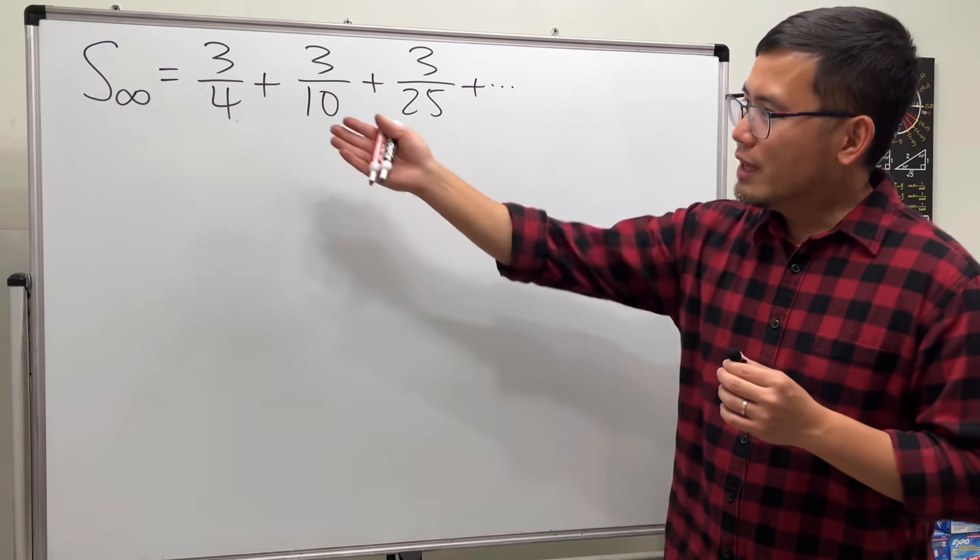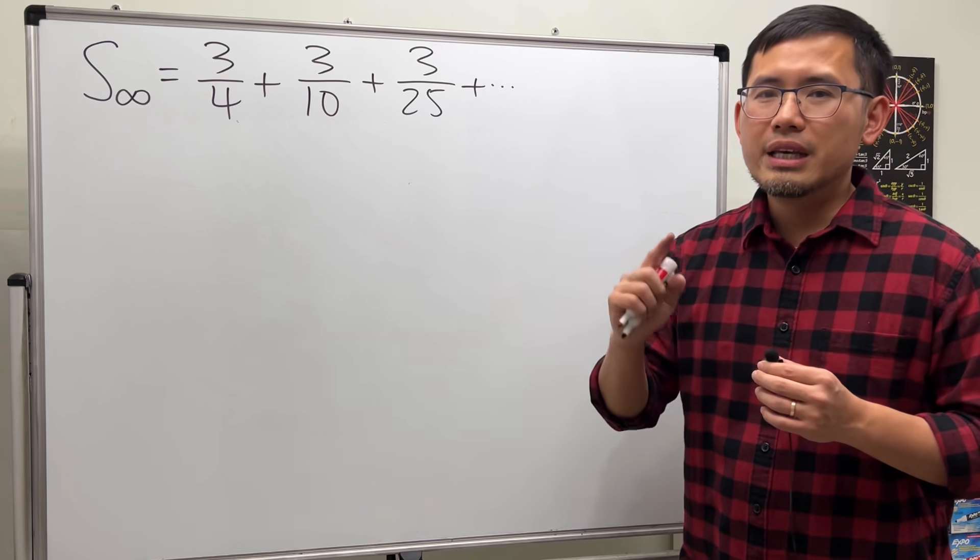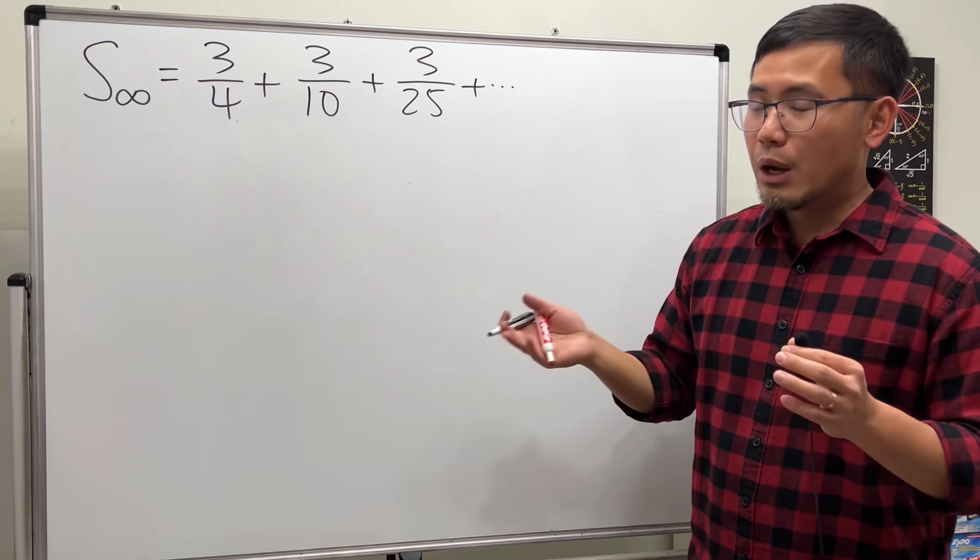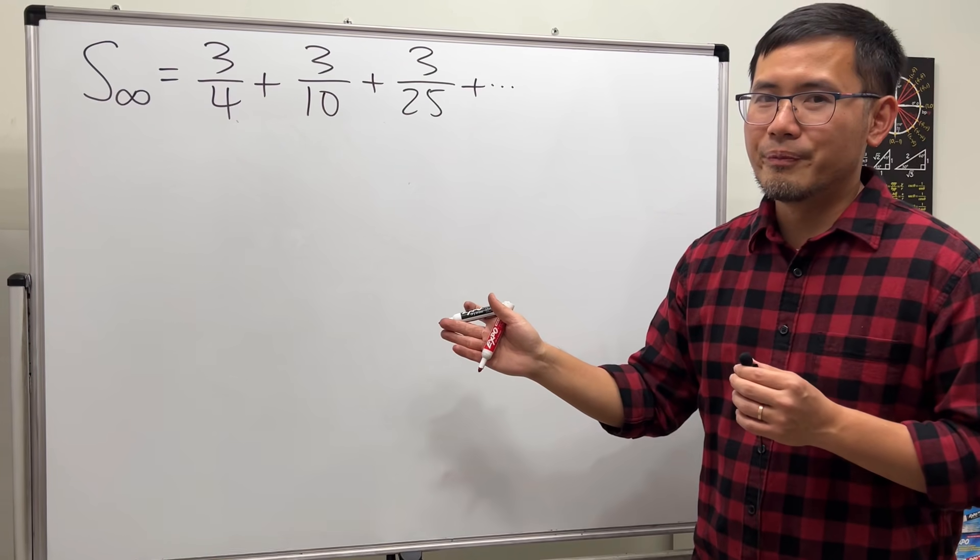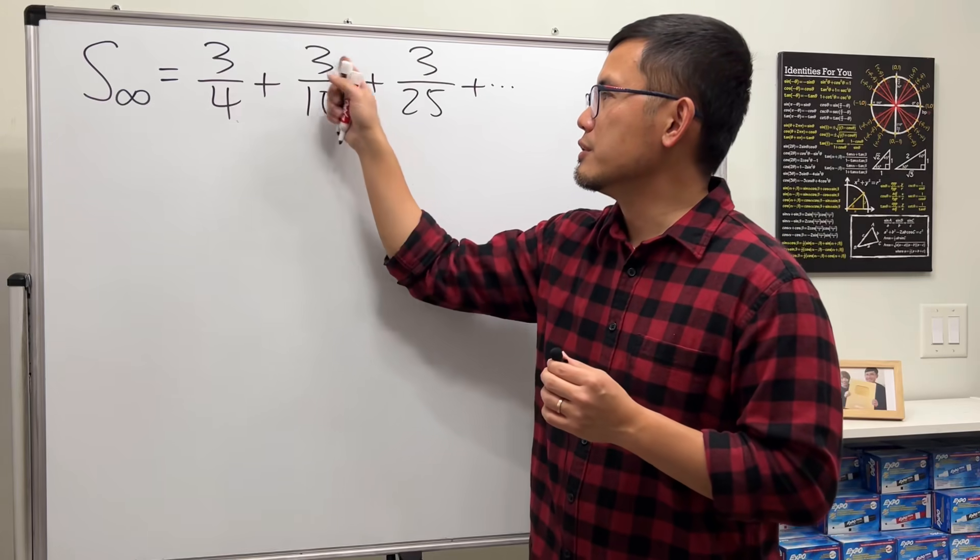So our first goal is to find the common ratio. I think this question is so creative because the numerators are just 3, but it's also pretty mean because not only do we only have the first three terms, but all of this right here are just 3s.